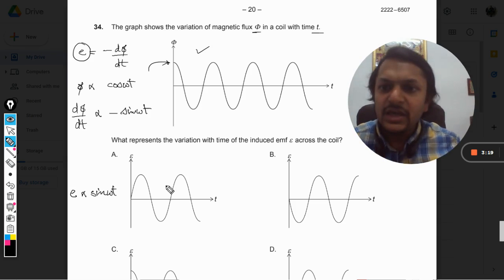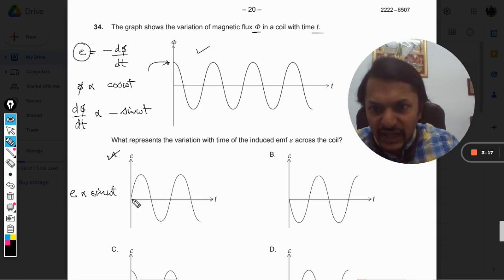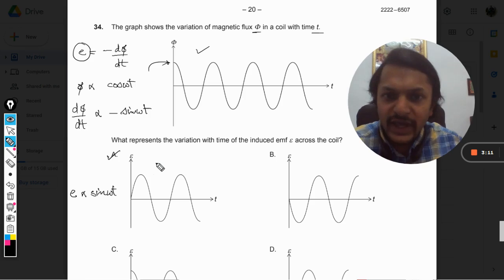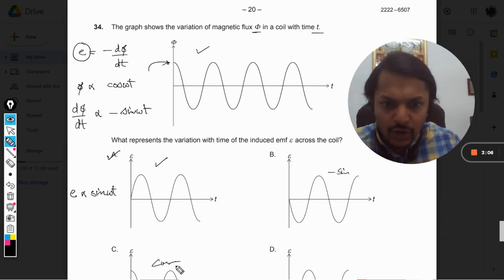And we can say that emf produced will be directly proportional to positive sine omega t. And thereby we can say that our answer will be A, because the A graph is similar to the graph of the sine theta.